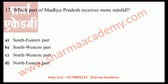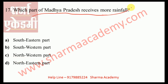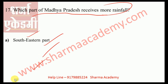The next question: which part of Madhya Pradesh receives more rainfall? Options are southeast, southwest, northwest, or northeastern part. The correct answer is the southeast part. The south and southeast regions tend to experience higher rainfall, whereas the northwest receives less. Mandla, Balaghat, Jabalpur, and other extreme eastern parts receive more than 150 centimeters of rainfall.